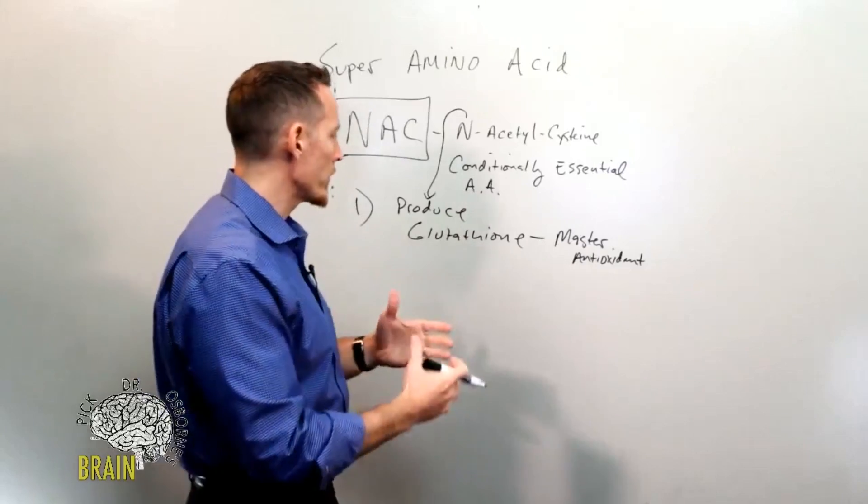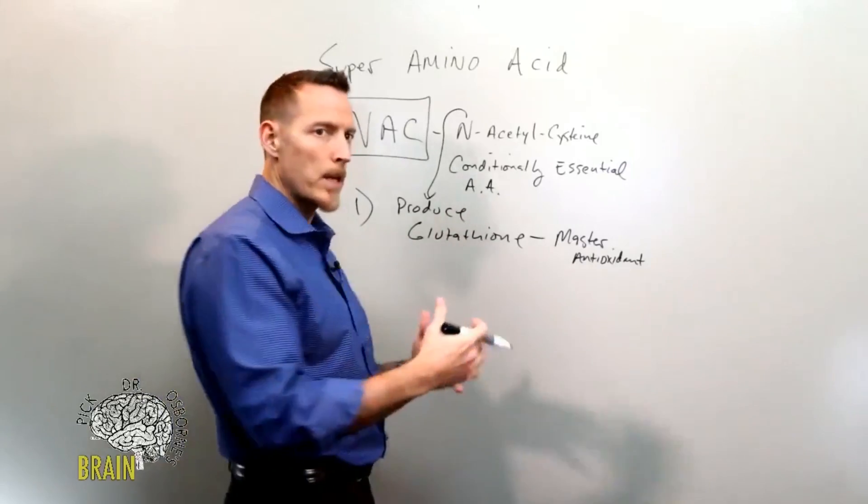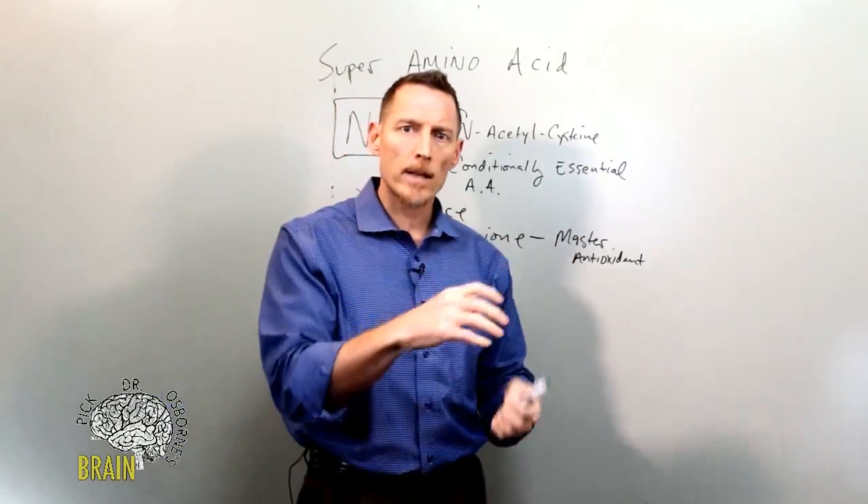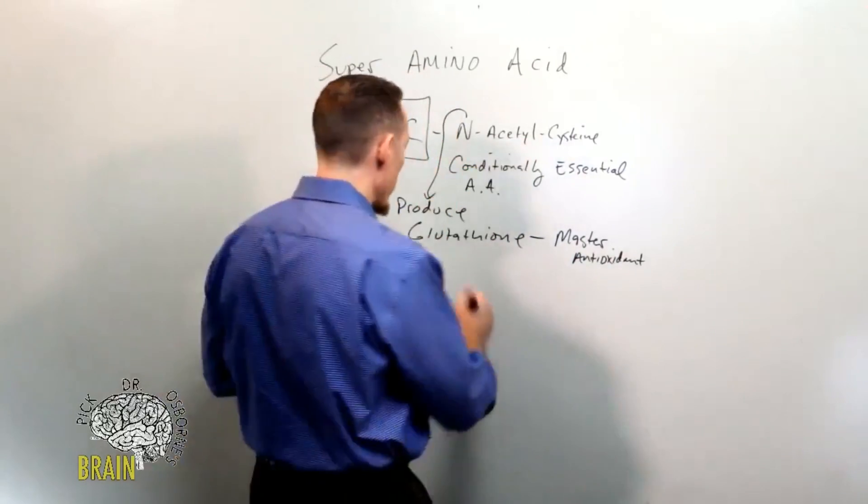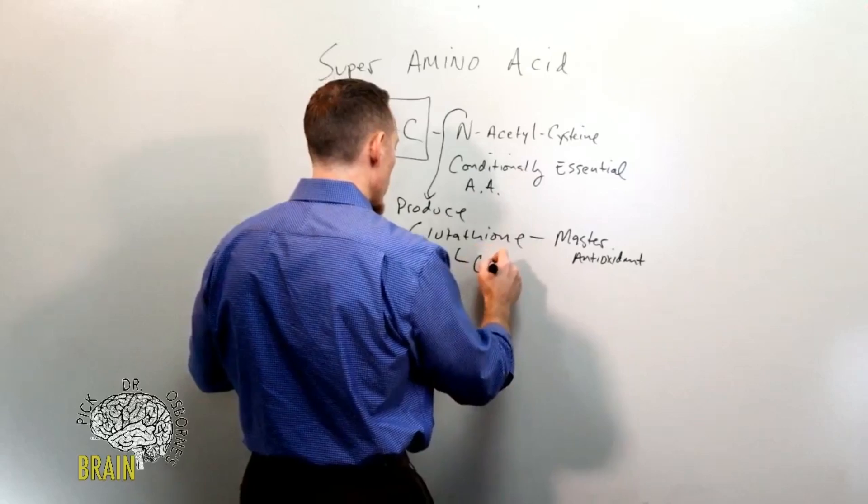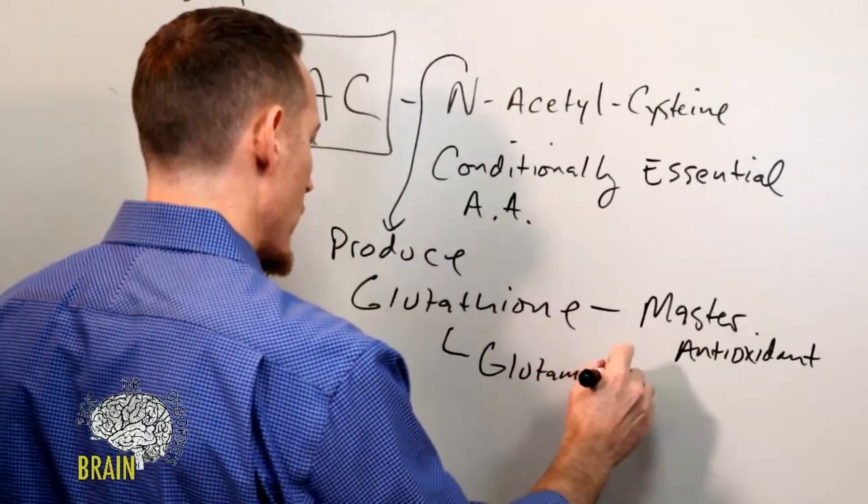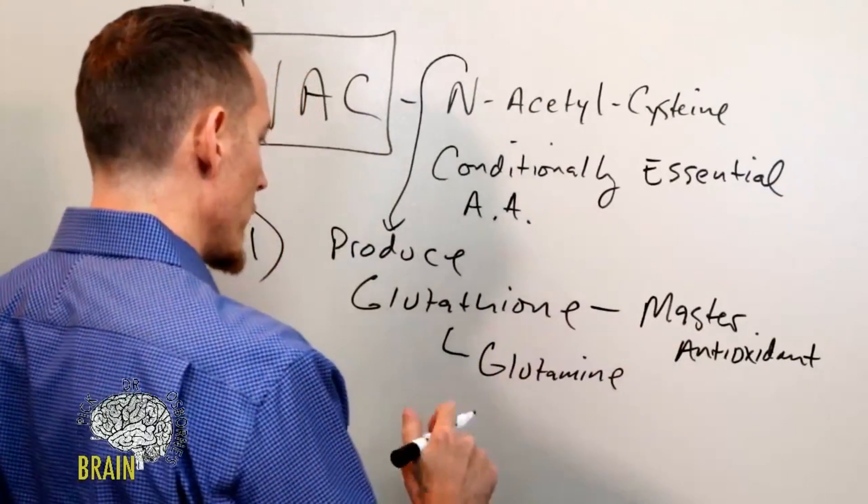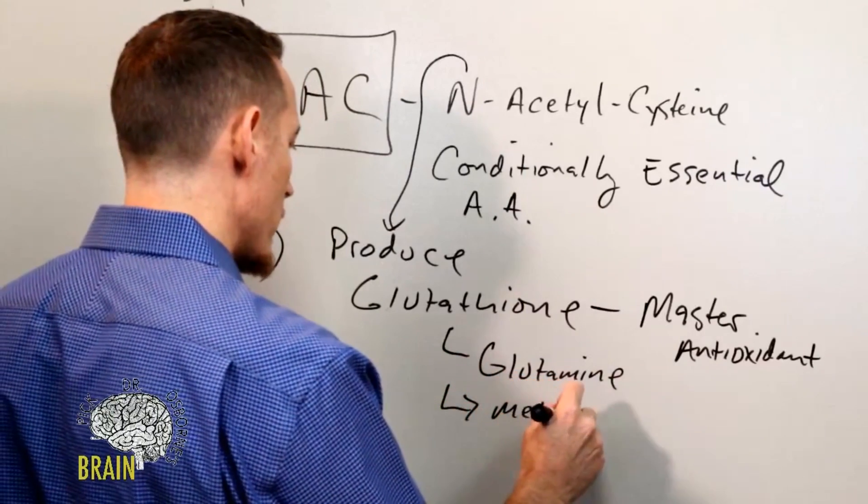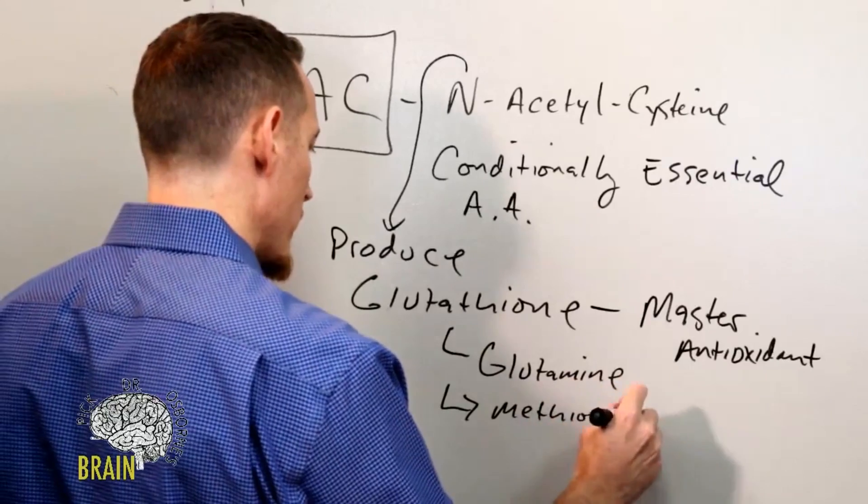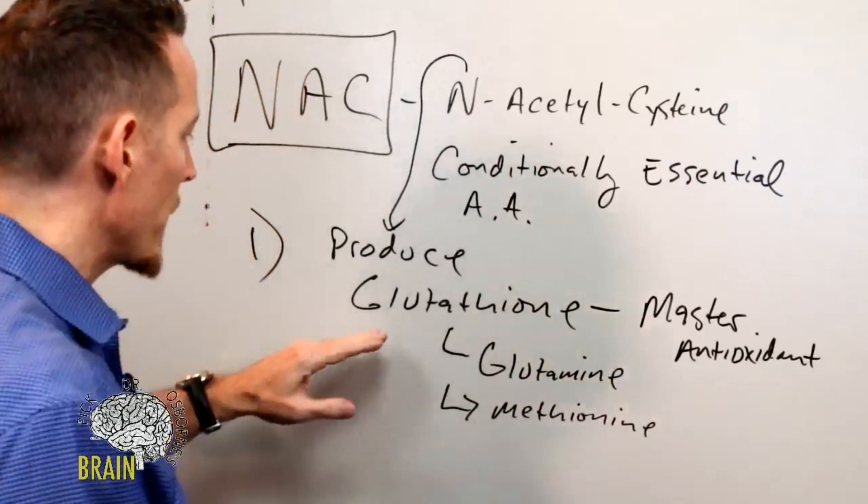Glutathione is actually what's called a tripeptide. What does that mean? It means it's three amino acids that are connected together. N-acetylcysteine is one of them, but also glutamine is another, and methionine is another. So these three amino acids come together and form the tripeptide glutathione.